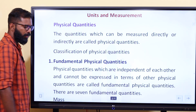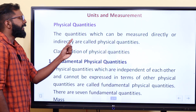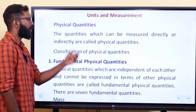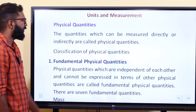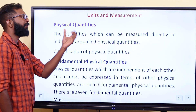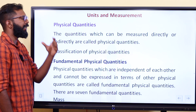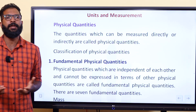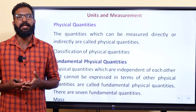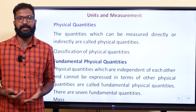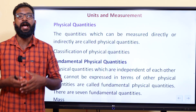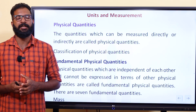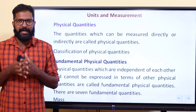What are physical quantities? The quantities which can be measured directly or indirectly are called physical quantities. For example, we measure velocity, acceleration, and length — all of these are physical quantities.